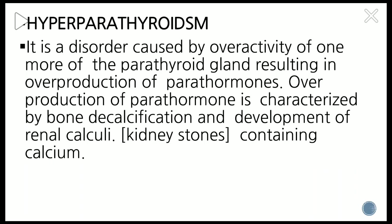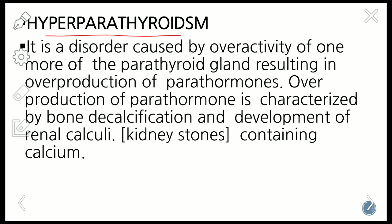Hyperfunctioning of the gland is called as hyperparathyroidism. Hypofunctioning of the gland is called as hypoparathyroidism. Then we have parathyroid tumor and some syndromes called as MEN syndrome. Hyperparathyroidism is the overactivity of one or more of the parathyroid glands resulting in overproduction of parathyroid hormone — the hormone secreted by the parathyroid gland.